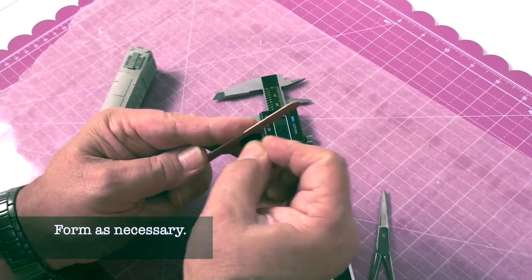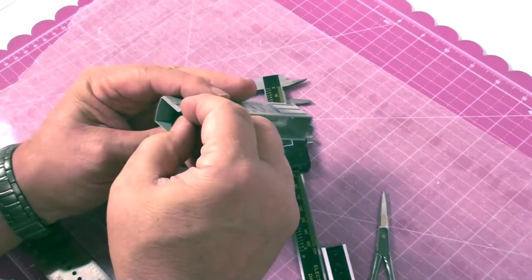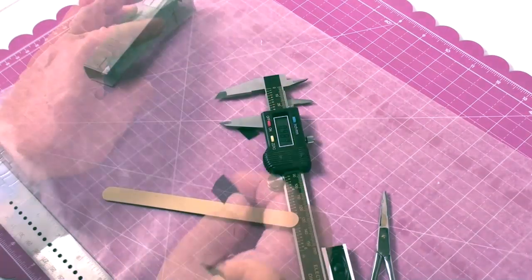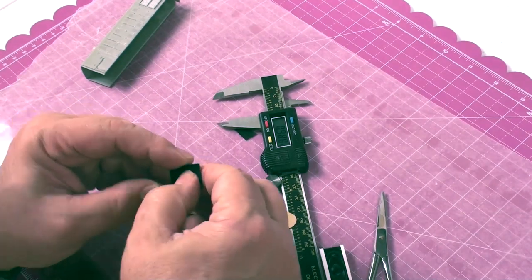We'll use caulk to finish the seal but it's nice the closer it is. You could probably use just a straight edge and the caulk would fill it but I like to be a little more precise than that.